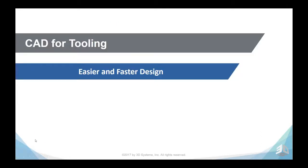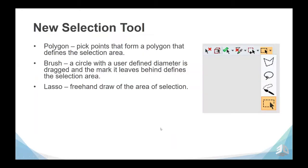For general cut for tooling, there is a new selection tool allowing us to select elements with more flexibility. Options include the polygon — pick points that form a polygon defining the selection area; the brush — a circle with a user-defined diameter that marks elements when dragged above them; and the lasso — a freehand draw of the selection area. This simplifies selection and unselection of elements.